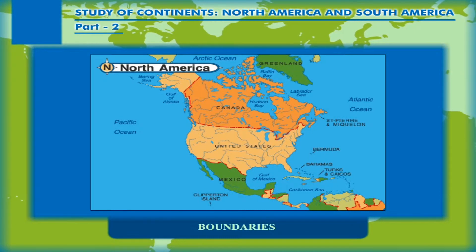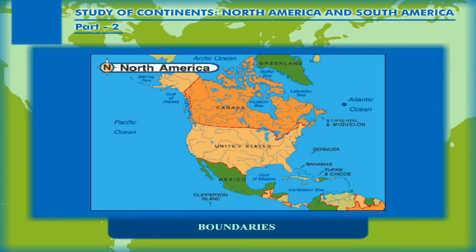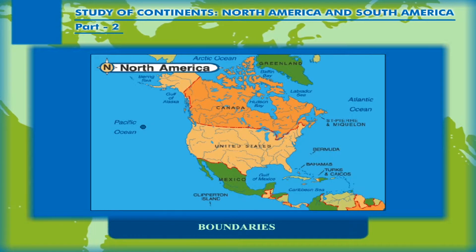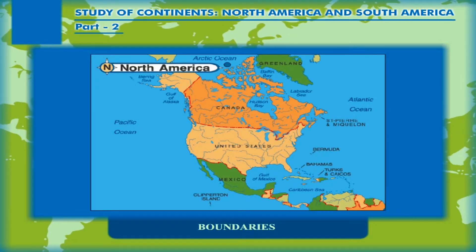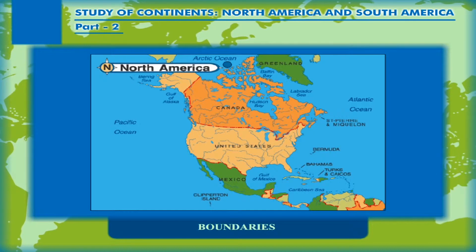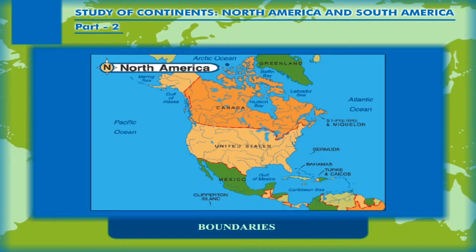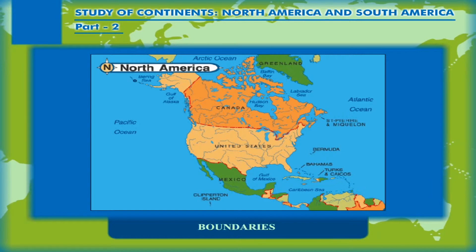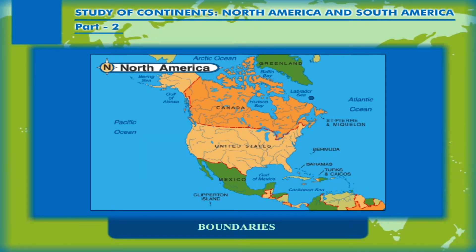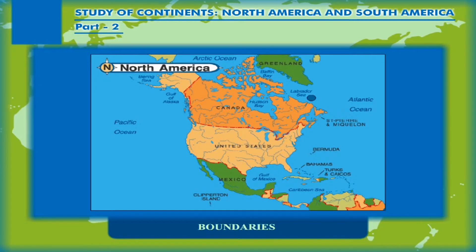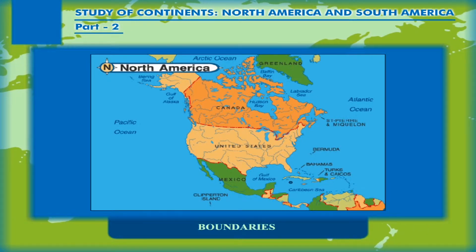North America is bordered by the Atlantic Ocean on the east, the Pacific Ocean on the west, and on the north by the Arctic Ocean. A number of seas touch the border of the continent: the Bering Sea to the northwest, the Beaufort Sea to the north, and the Caribbean Sea to the southeast.